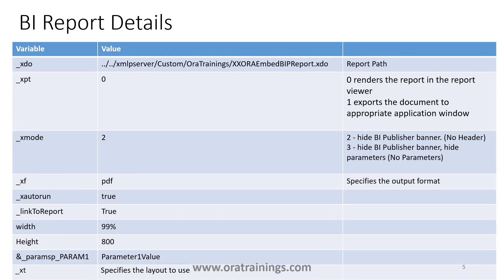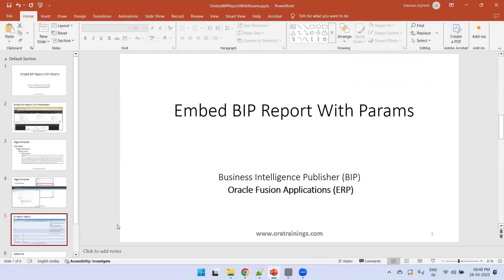Additional parameters include output type _xf, outer run option, link to report, width, and height. Another very important one is the parameters field. If you want to specify a different layout, you can mention it here. These are the high-level parameters you need to mention while invoking the BIP report from Oracle Fusion.